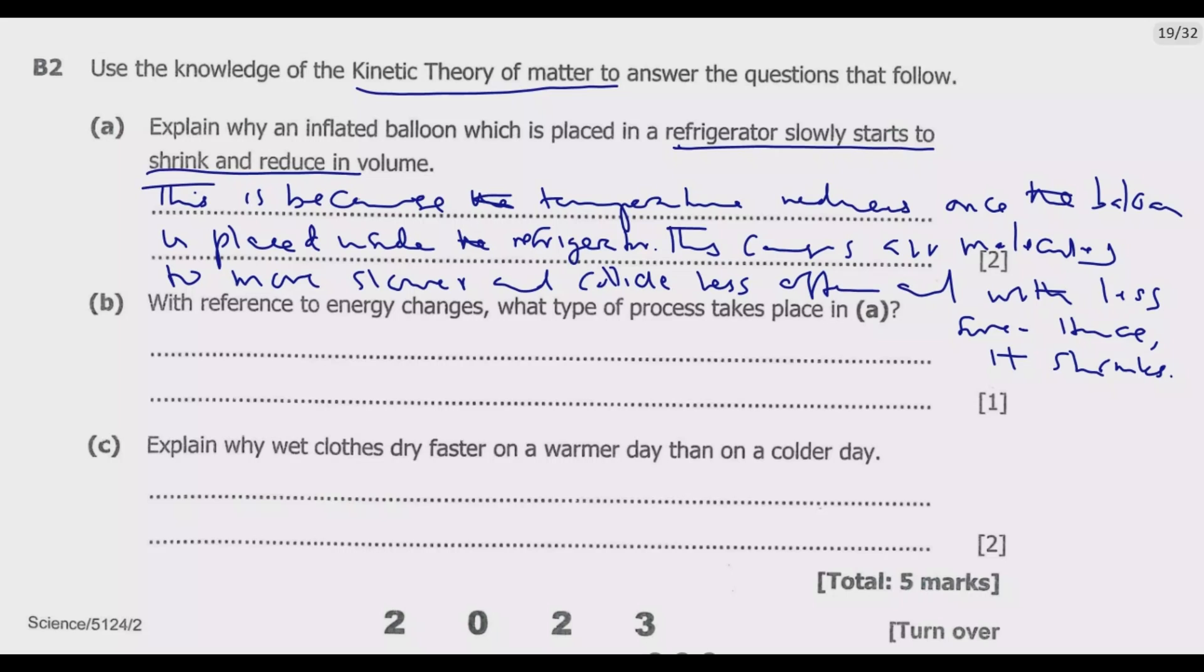So the process taking place in (a) is an exothermic process. Energy is released to the surroundings, usually in form of heat. When the balloon is placed in the refrigerator, heat energy from the air molecules inside the balloon is transferred to the colder air in the refrigerator. This causes the air molecules inside the balloon to lose kinetic energy and slow down, which results in a decrease in the volume as indicated by the fact that the balloon starts shrinking and reduces in volume. Hence this process is known as the exothermic process.